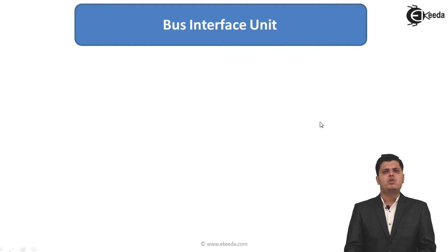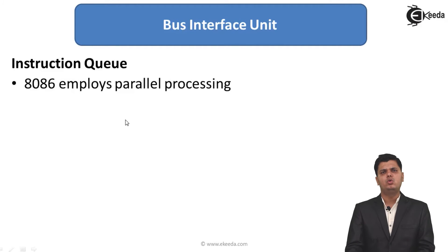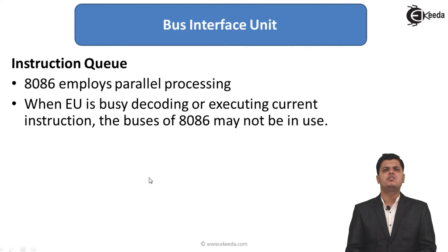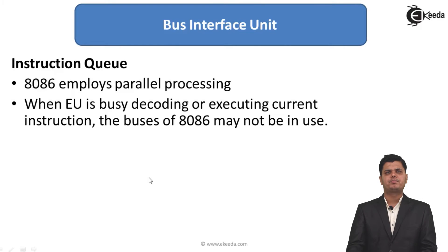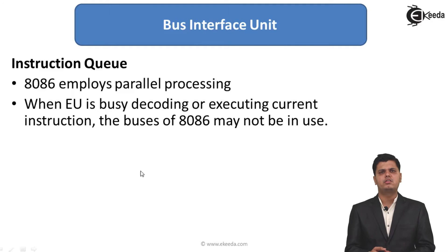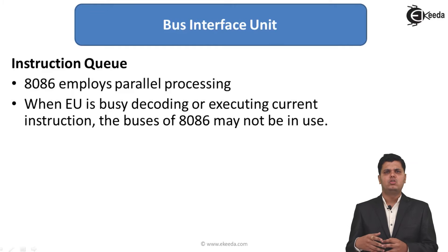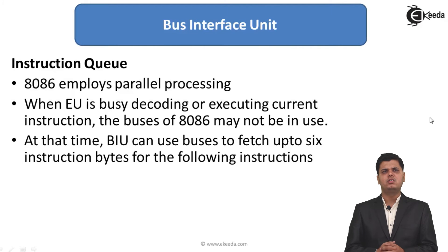8086 employs parallel processing, which means simultaneously doing two or three different operations. When the execution unit is busy decoding and executing the current instruction, the buses of 8086 may not be in use. When the execution unit is performing arithmetic, logical, or data transfer operations, it is not working on the external buses, so the bus interface unit can use those buses to incorporate parallel processing.